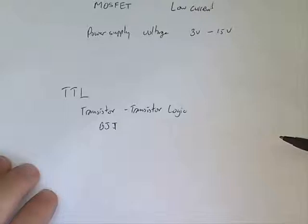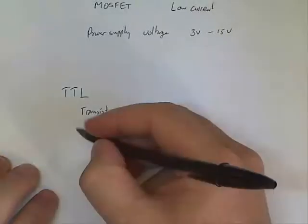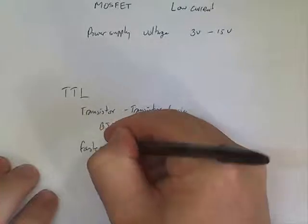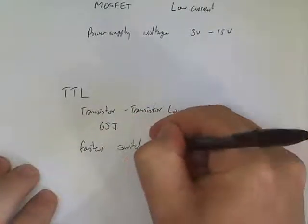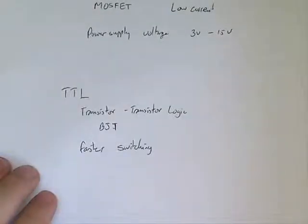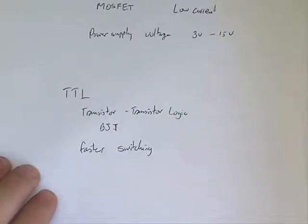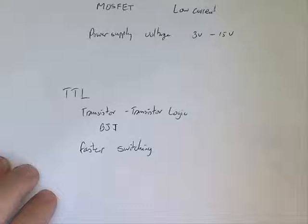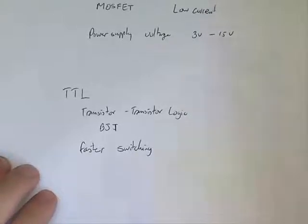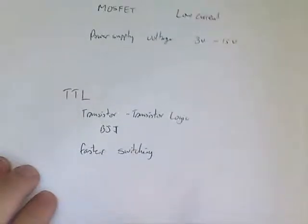TTL is much faster switching. What that means is that the transition from a high to a low state for a TTL is very quick — in the order of a few nanoseconds — compared to CMOS, which is in the order of tens of nanoseconds. For most applications, CMOS is fine for that.